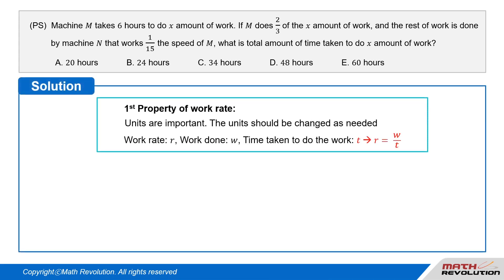Solution: First property of work rate - units are important. The units should be changed as needed. Let the rate of work be R. If the time taken to do work W is T, then R × T = W, or R = work done/time = W/T.